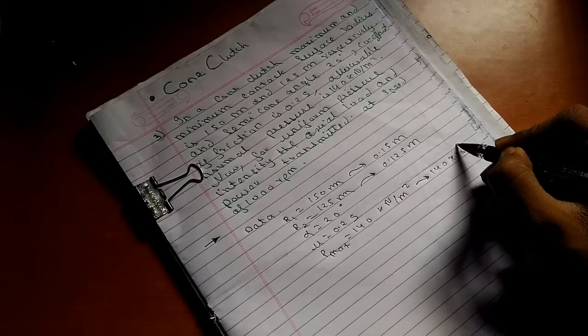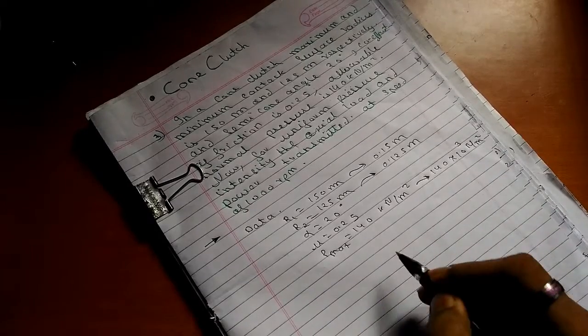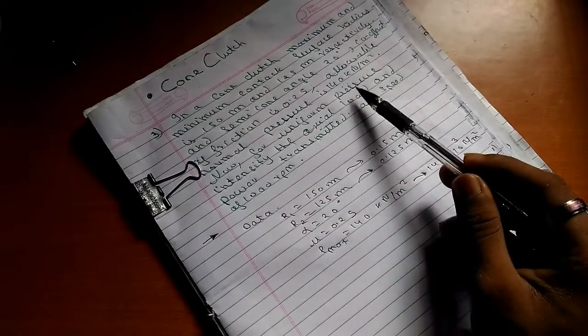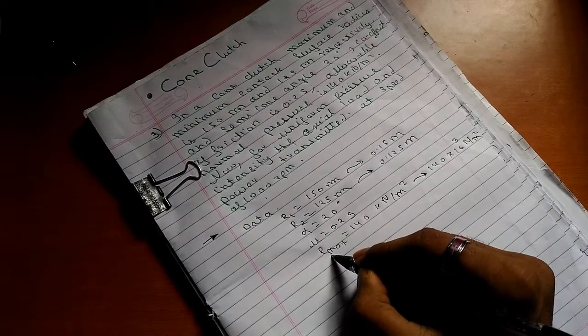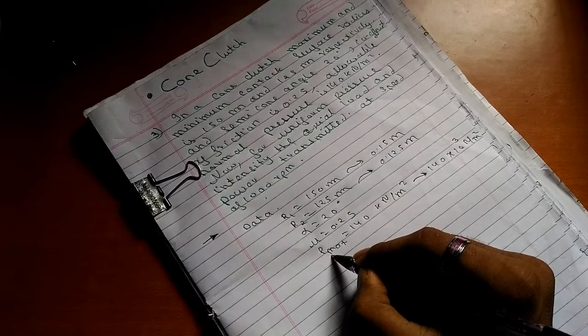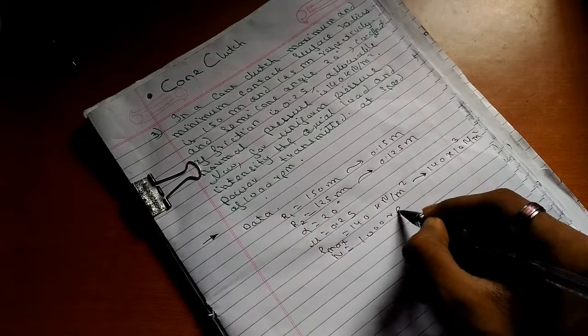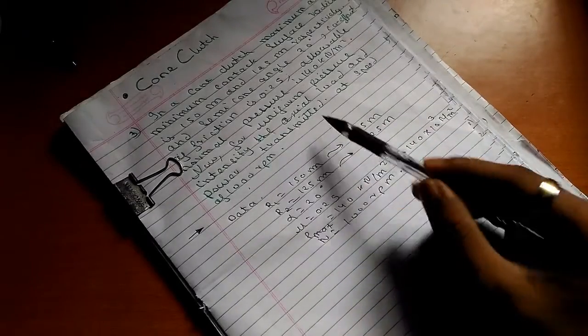Converting to newton, that is 140 times 10 raised to 3 newton per meter square. The speed n equals 1000 rpm. We have to calculate the axial load and power transmitted.